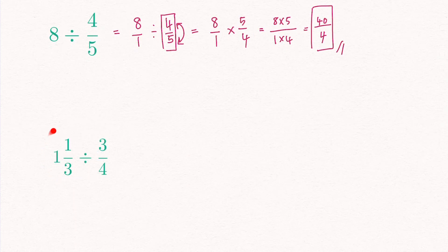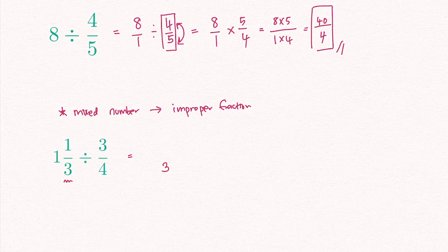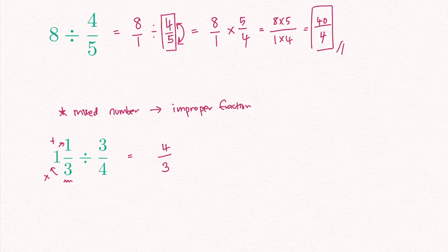Here we have a question with a mixed number dividing by a proper fraction. Whenever we have a mixed number, the first step is to convert it into an improper fraction. So keeping the denominator 3 as it is, I need to multiply: 3 times 1 and add 1. 3 times 1 is 3, plus 1 is 4. So my numerator is 4. This means that 1 and 1 third is the same as 4 over 3.